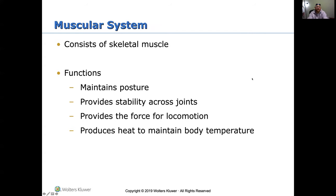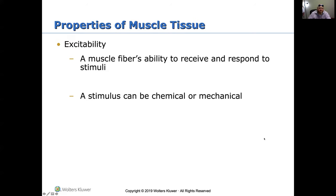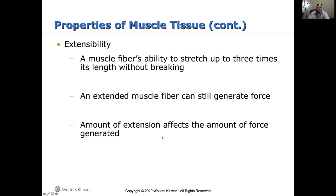The muscular system consists of skeletal muscle. It helps maintain posture, provides stability across joints, provides force for locomotion — walking, moving, running — and produces heat to maintain body temperature. Muscle tissue has a property called excitability: the muscle fiber's ability to receive and respond to stimuli, which can be chemical or mechanical. The more excitable the muscle fibers are, the faster and more effective the muscle movement. Extensibility is the muscle fiber's ability to stretch up to three times its length without breaking — an extended muscle fiber can still generate force.